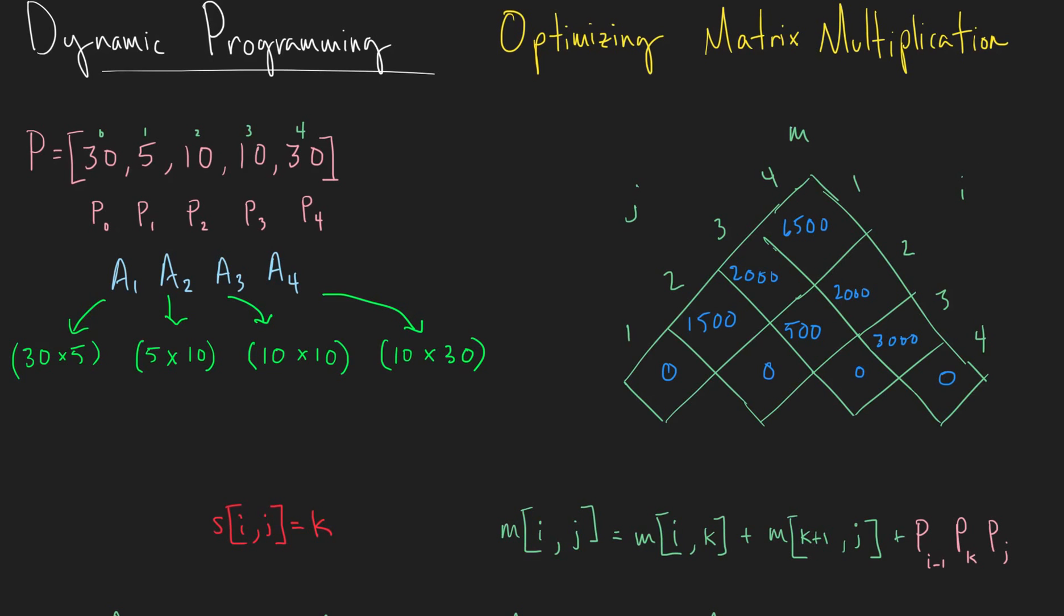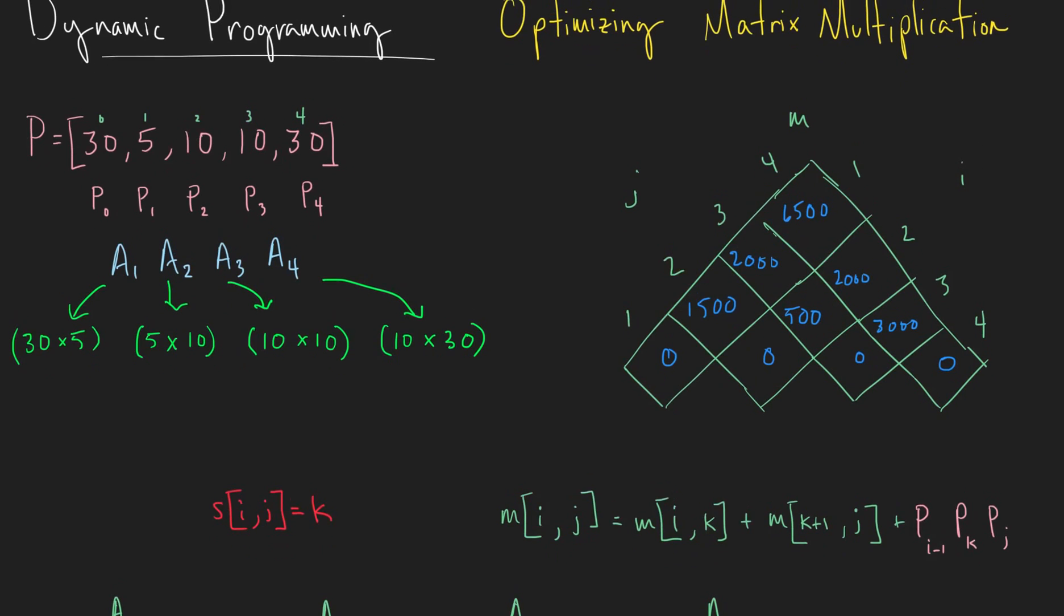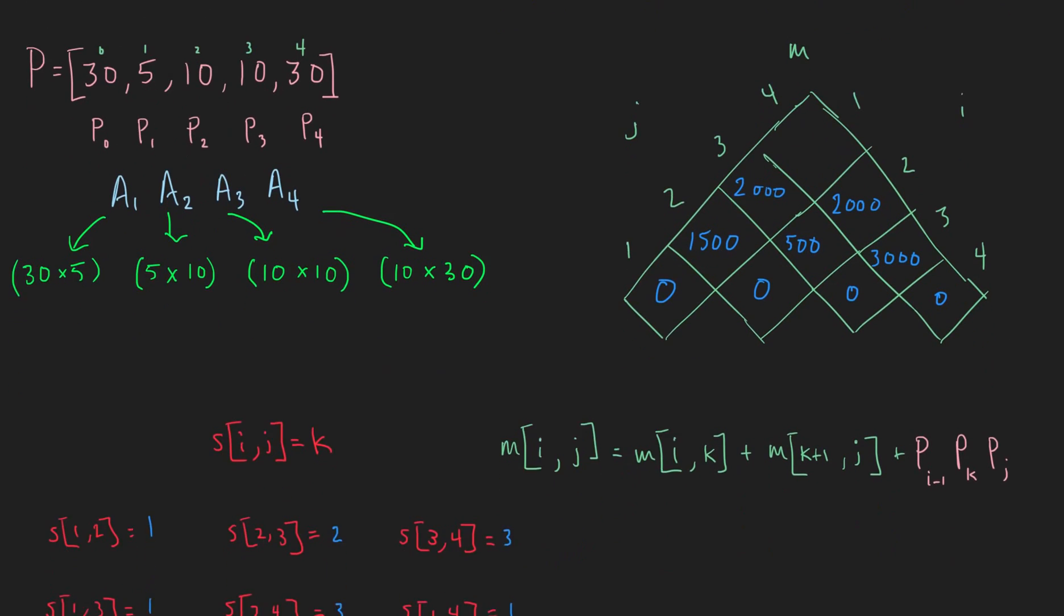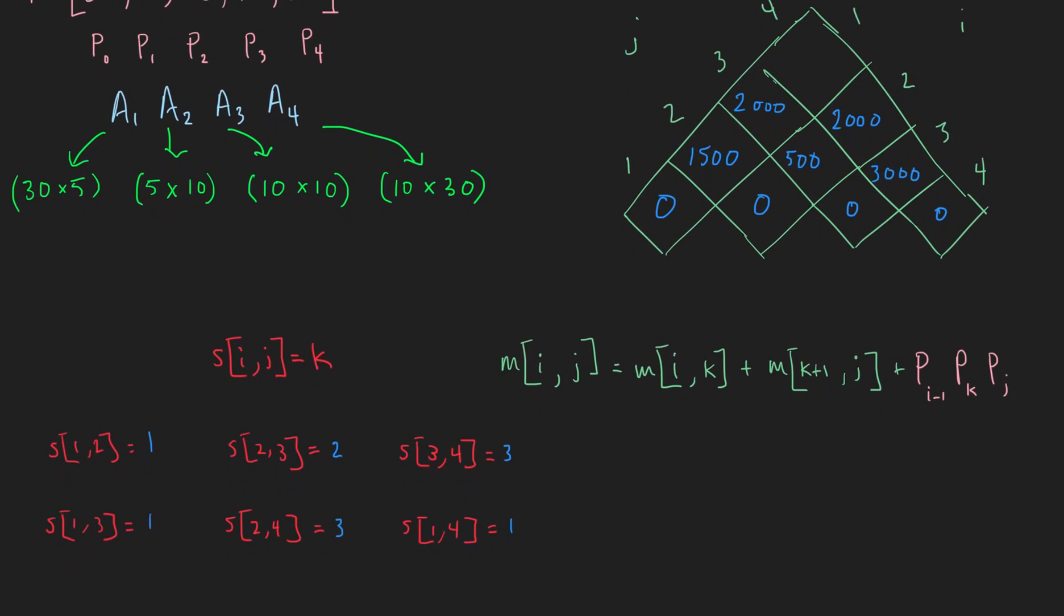So now we've computed this whole table. So what do we do with this? We're still trying to optimize this. In other words, we're trying to find the optimal parenthesization. So what we're going to do is we are going to use the things that we just found, along with some of our S values.